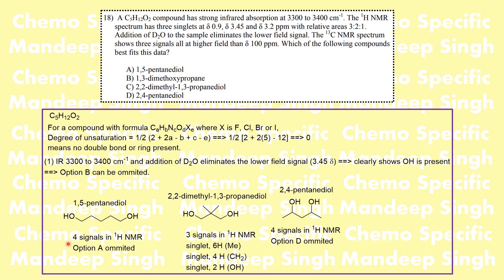For option A — 1,4-pentanediol — since it is a symmetrical structure, if we divide it along its axis of symmetry we are going to see a total of four signals: one signal for the two hydroxy groups, one for these two methylene groups, one for those two methylene groups, and one for the central methylene group. So total four NMR signals.